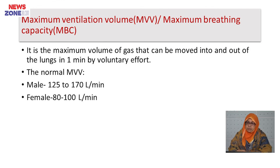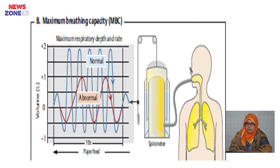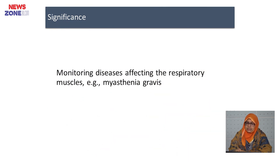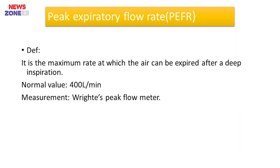Maximum breathing capacity is the maximum volume of gas that can be moved into and out of the lung in one minute by voluntary effort. Normal values are 125 to 170 liters per minute in males and 80 to 100 liters per minute in females. Its significance is in monitoring lung diseases affecting respiratory muscles, such as myasthenia gravis. Peak expiratory flow rate is the maximum rate at which air can be expired after a deep inspiration — normal value is about 400 liters per minute, measured by Wright's peak flow meter.